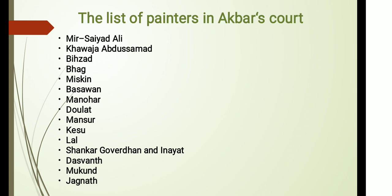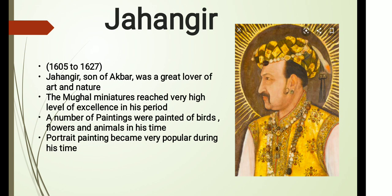The fourth emperor of the Mughal Empire, Jahangir, son of Akbar, was a great lover of art and nature. The Mughal miniature reached a very high level of excellence in his period. He encouraged his painters, and as a result a number of paintings were made of birds, flowers, and animals. Portrait painting became very popular during Jahangir's time, and we even find portraits of ladies illustrated in his period.